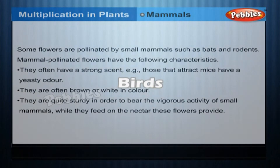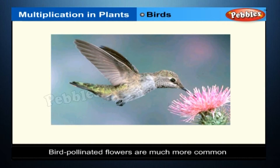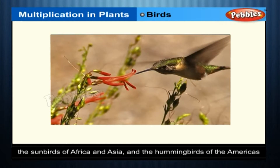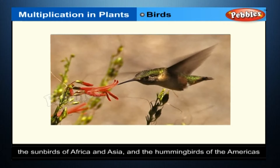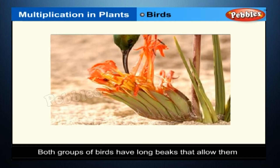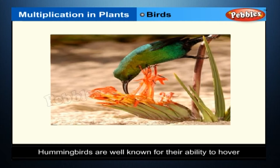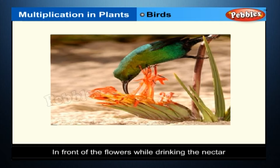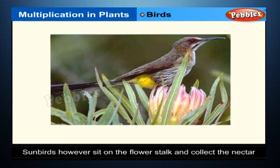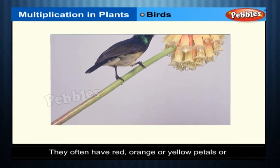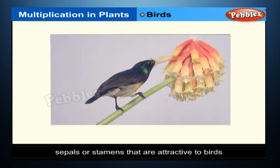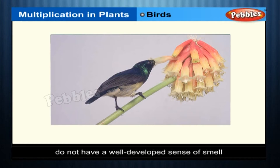Birds: bird-pollinated flowers are much more common than mammal-pollinated flowers. Two large groups of birds which pollinate flowers are the sunbirds of Africa and Asia and the hummingbirds of the Americas. Both groups have long beaks that allow them to reach inside the petal tubes or flowers. Hummingbirds are well known for their ability to hover in front of flowers while drinking nectar. Bird-pollinated flowers often have red, orange or yellow petals or sepals, and are not usually scented because most birds do not have a well-developed sense of smell.